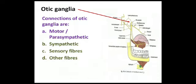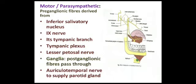Coming to the connections of the otic ganglion — there is a parasympathetic or motor component, a sympathetic component, sensory fibres, and other related fibres. For the main parasympathetic component, pre-ganglionic fibres are derived from the inferior salivatory nucleus. These fibres pass through the glossopharyngeal nerve, whose tympanic branch forms the tympanic plexus in the middle ear cavity, giving off the lesser petrosal nerve. The fibres are relayed in the otic ganglion, and post-ganglionic parasympathetic secretomotor fibres pass through the auriculotemporal nerve to supply the parotid gland.